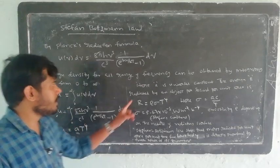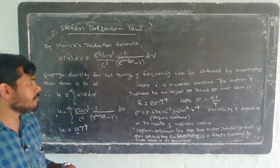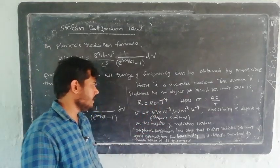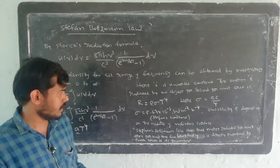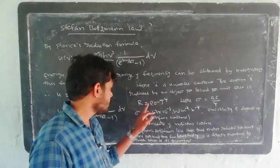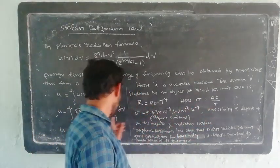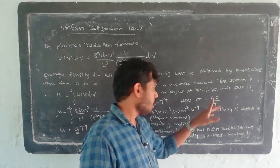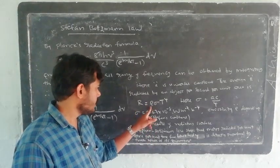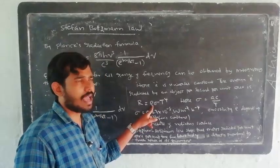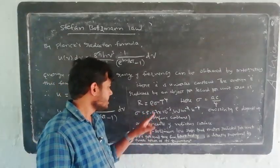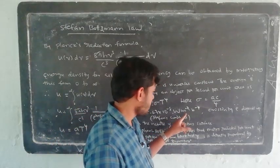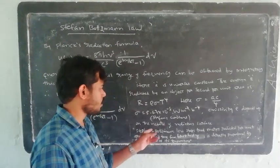The energy radiated by an object per second per unit area is R = e·σ·T⁴. Here, e is emissivity, σ is the Stefan-Boltzmann constant equal to 5.67 × 10⁻⁸ W·m⁻²·K⁻⁴, and a·c/4 is a constant. Emissivity e is a property of the radiating surface.